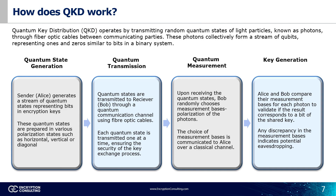First, we'll start with quantum state generation. In QKD, the sender, Alice, generates a stream of quantum states, typically using individual photons, with each state representing a bit of the encryption key. These quantum states are prepared in various polarization states, such as horizontal, vertical, or diagonal. Next, Alice sends the prepared quantum states to the receiver, Bob, through a quantum communication channel — typically a fiber optic cable or a free space transmission. Each quantum state is transmitted one at a time, ensuring the security of the key exchange process.